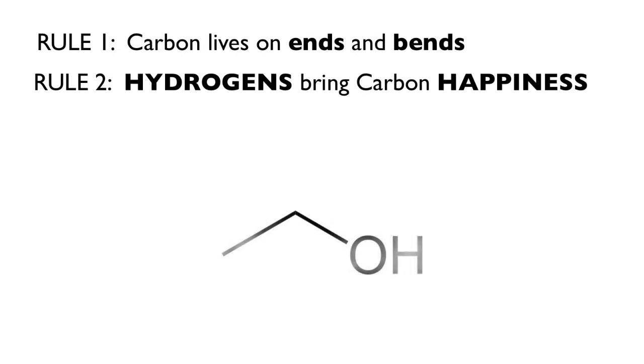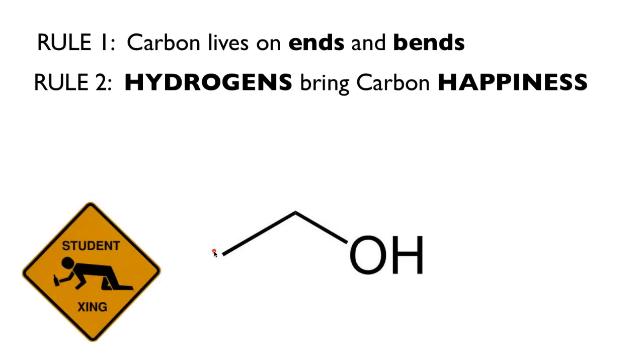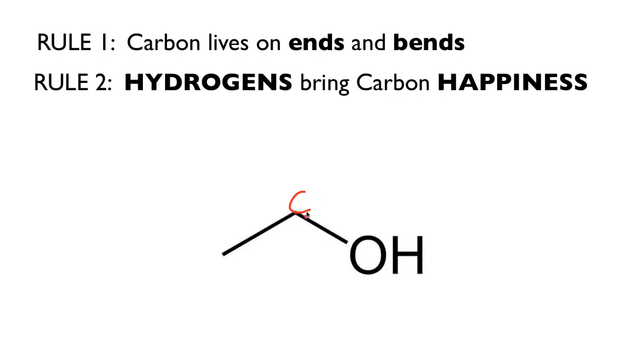Let's look at this again. This is actually ethanol. Some of you may have some experience with ethanol. So rule number one, carbon lives on ends and bends. What I mean by that is any bend in a chain means there is a carbon there. That is code for carbon. The end also implies a carbon. So that's rule number one.